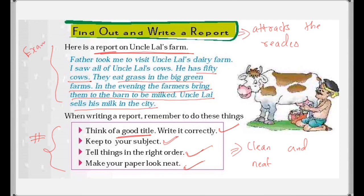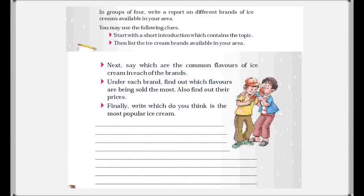When writing a report: think of a good title and write it correctly — a title is important as it attracts the reader. Keep it to the subject — write only about the topic. Tell things in the right order — order matters the most. Make your paper look neat — if it's clean, people will like to read it. Now we need to write a report on different brands of ice cream available in our area using the given clues.